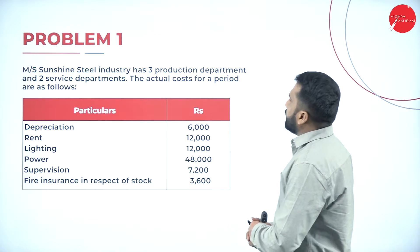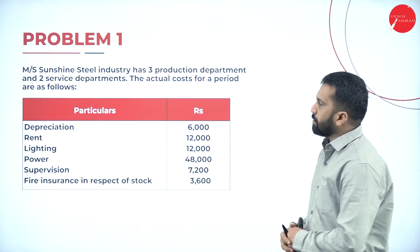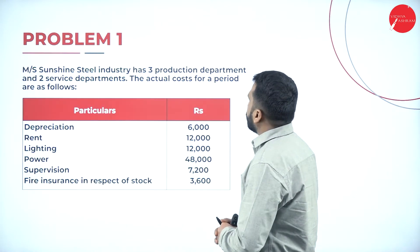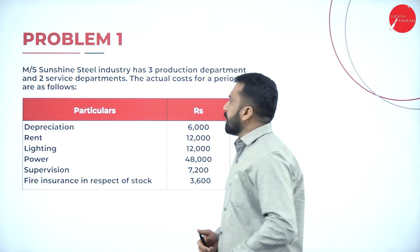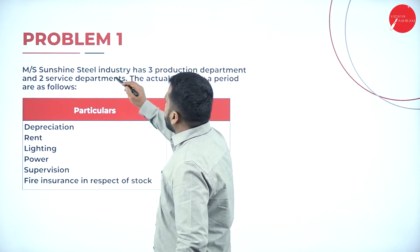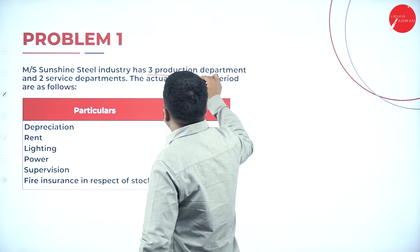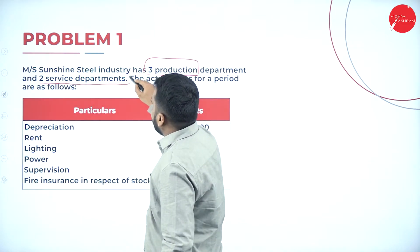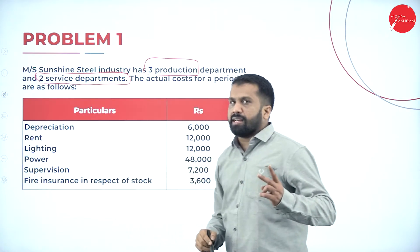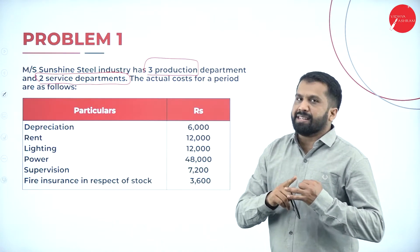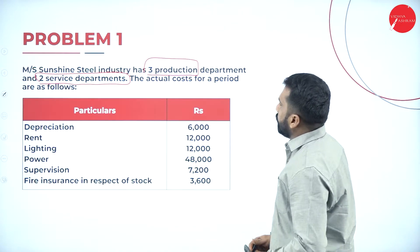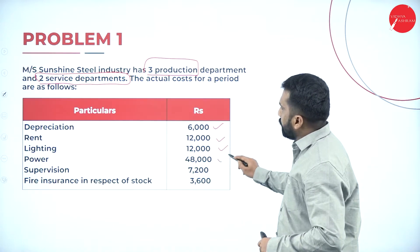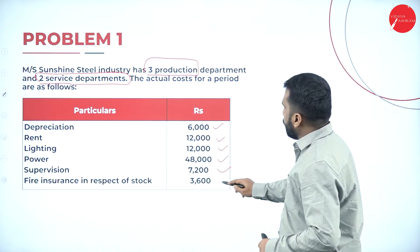Problem number one: Major Sunshine Steel Industry has three production departments and two service departments. The actual costs for a period are as follows. The first set of expenses to be apportioned includes: depreciation, rent, lighting, power, supervision charges, and fire insurance.